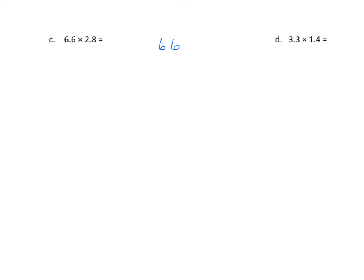As we've done in the previous lesson, we're going to do this a couple ways. We're going to use unit form, and then we're going to use fraction form, then we're going to connect another idea for how to place the decimals. So we'll set up this first problem. We have 6 and 6 tenths, which is 66 tenths, and we'll multiply it by 2 and 8 tenths, which is 28 tenths.